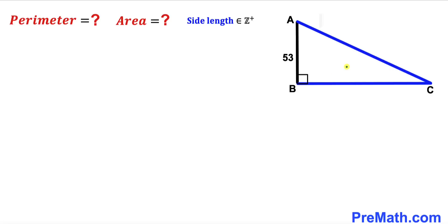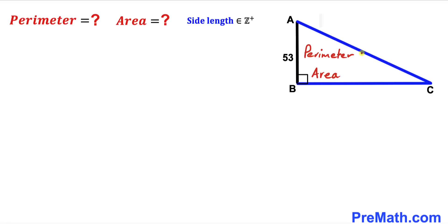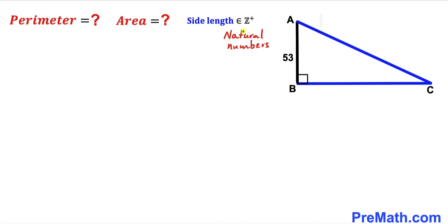Welcome to pre-math. In this video we have a right triangle ABC such that its side length AB is 53 units. Our task is to calculate the perimeter and the area of this triangle. Keep in mind that the side lengths of this triangle are positive integers — in other words, natural numbers, whole numbers.